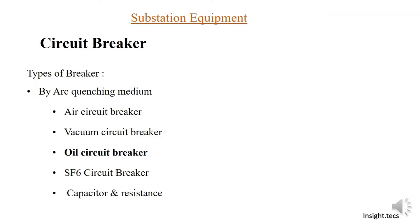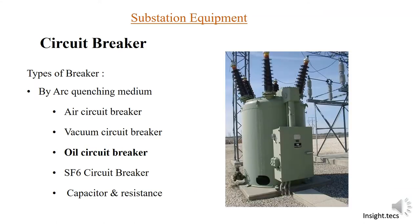The next category is the oil circuit breaker. Oil circuit breakers can be further classified as bulk oil circuit breakers and minimum oil circuit breakers. Both types are obsolete now and very rarely used in any substations, because they contain a lot of oil as an arc quenching medium and sometimes it becomes hazardous. So this type of breaker is not normally used in practice today.